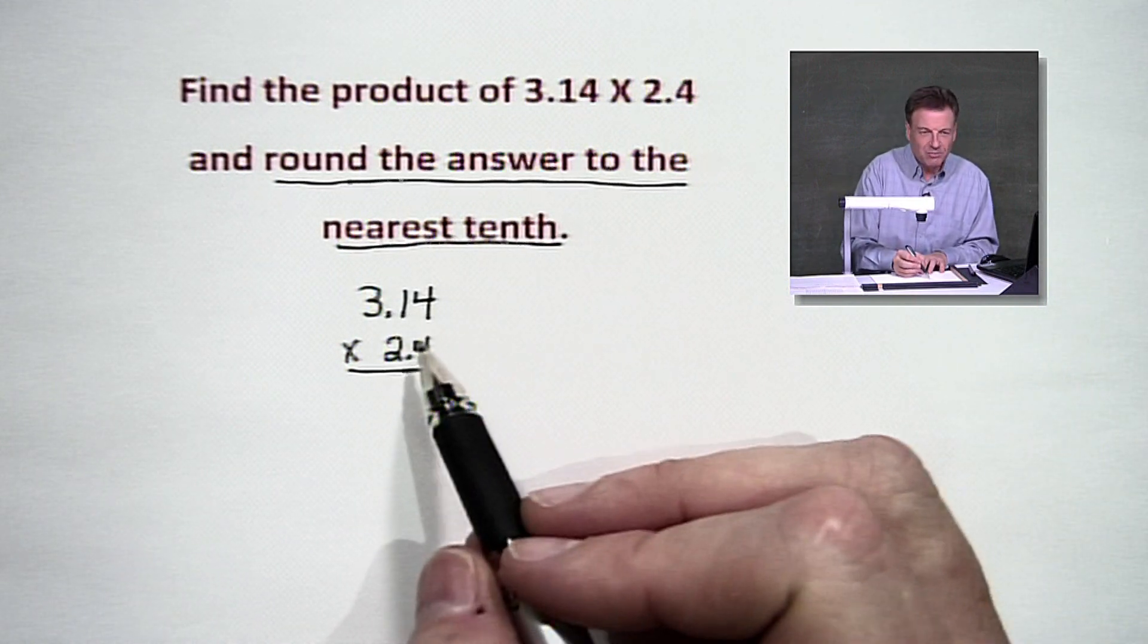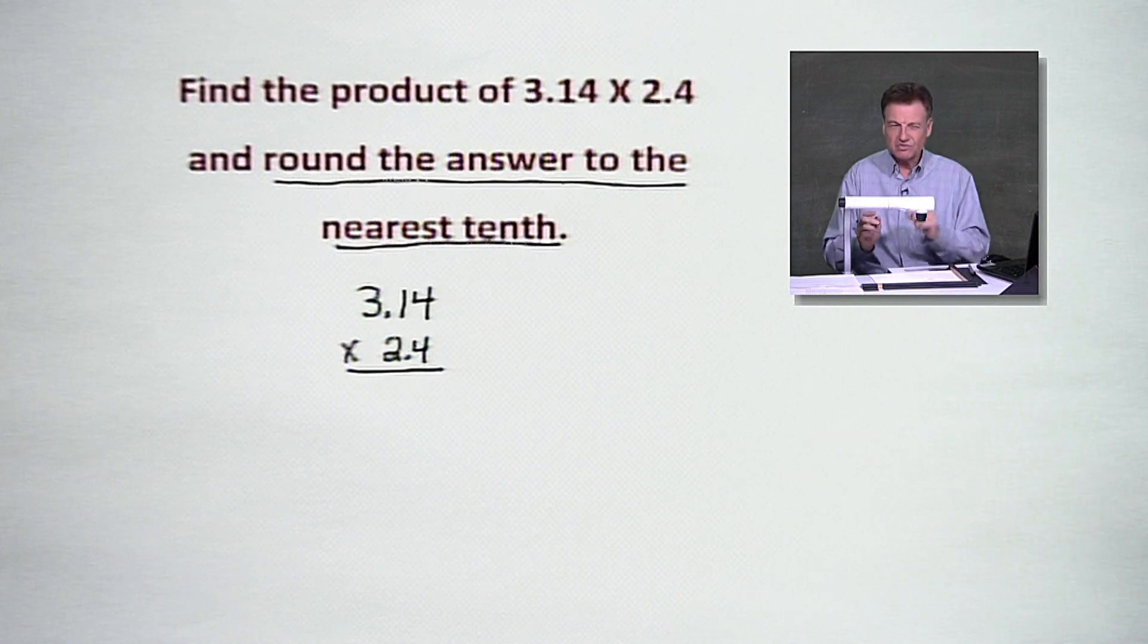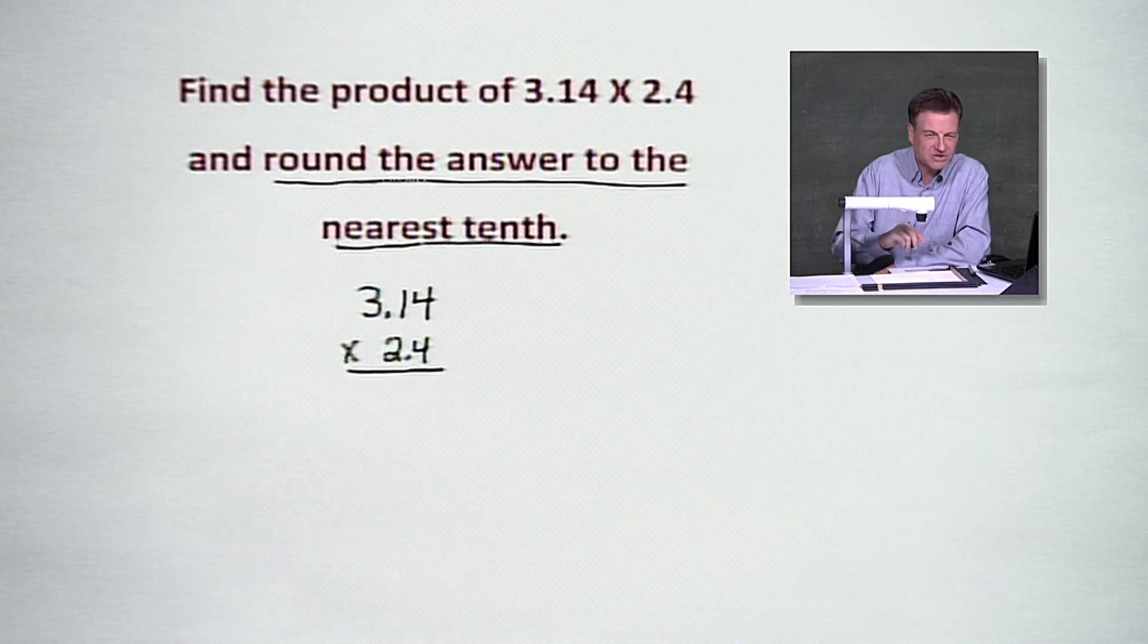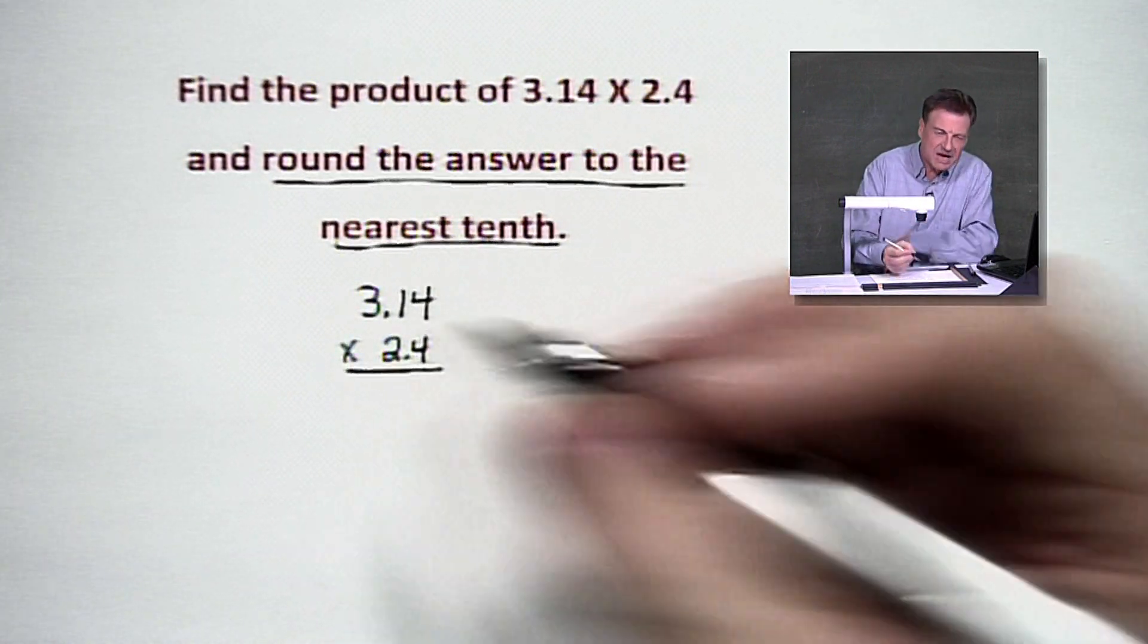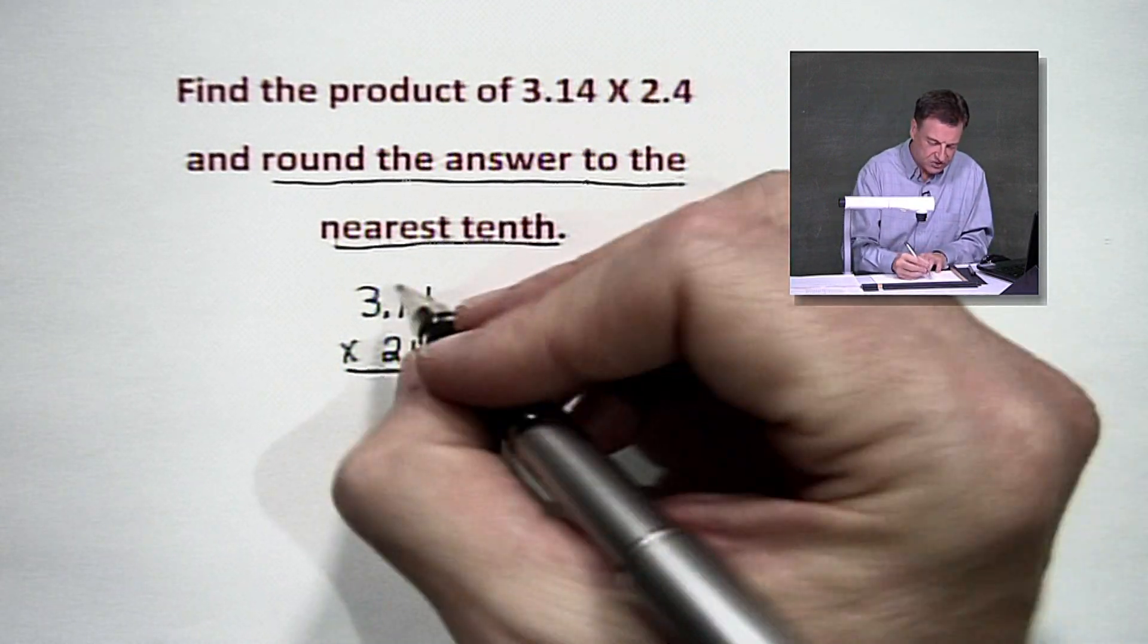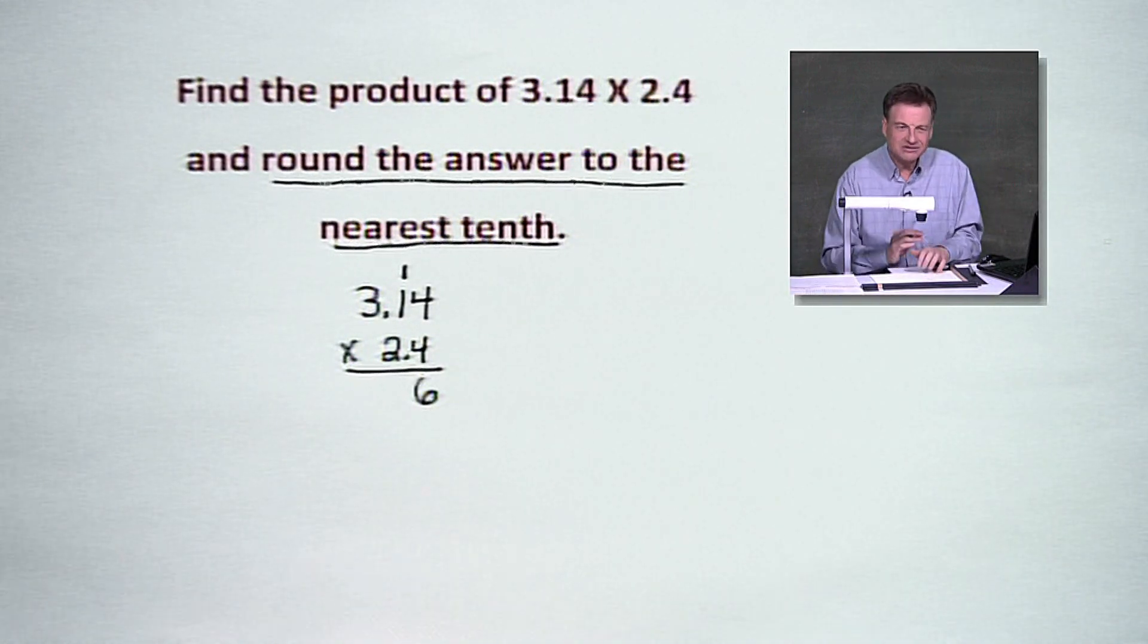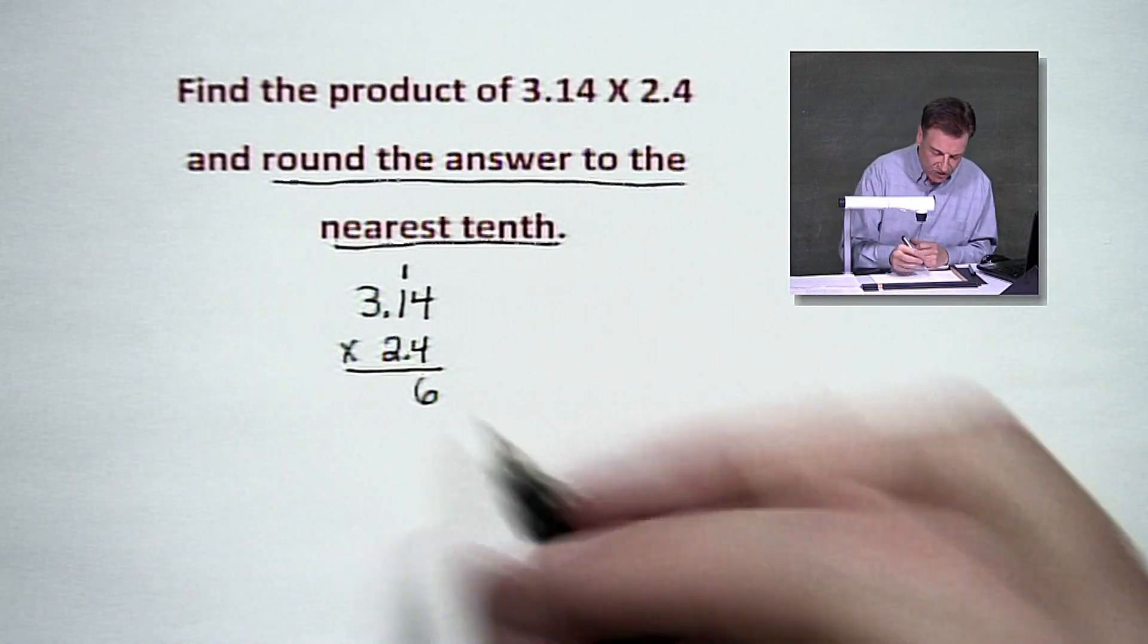Now, I can guarantee you already, you're going to have more than tenths place here. I see 1, 2, 3 decimal places, so round off will be kind of fun on this. We got 4 times 4, it's going to give us 16, so pop down the 6. We'll put a 1 right up there. 1 times 4, got that. 4 and add 1 to that, it's going to be 5.